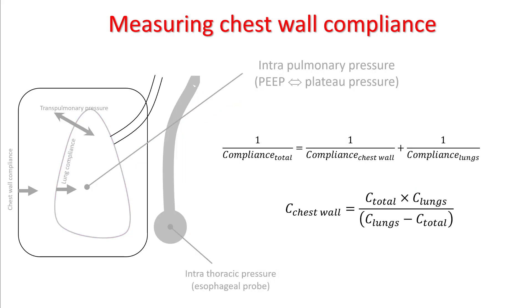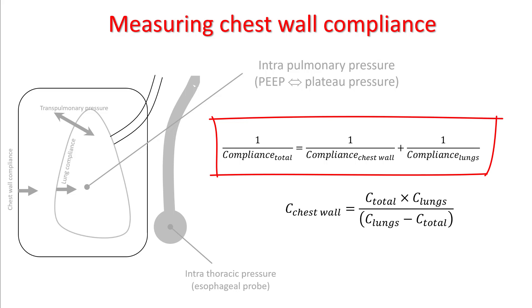Transpulmonary pressures at end-expiration would be P minus pressure in the esophageal probe at end-expiration, and transpulmonary end-inspiratory pressures would be P-plateau minus pressure in the esophageal probe at end-inspiration. Endostatic lung compliance would be given by tidal volume divided by the driving pressure, which is the difference of these two numbers. To measure chest wall compliance, subtract the lung compliance from total compliance using this formula.